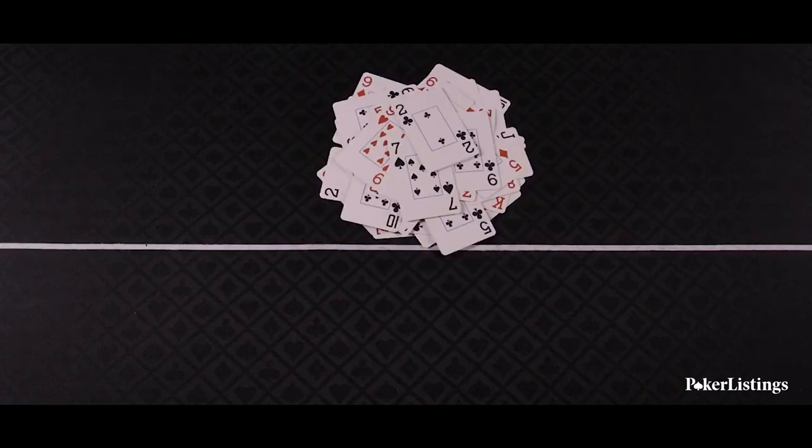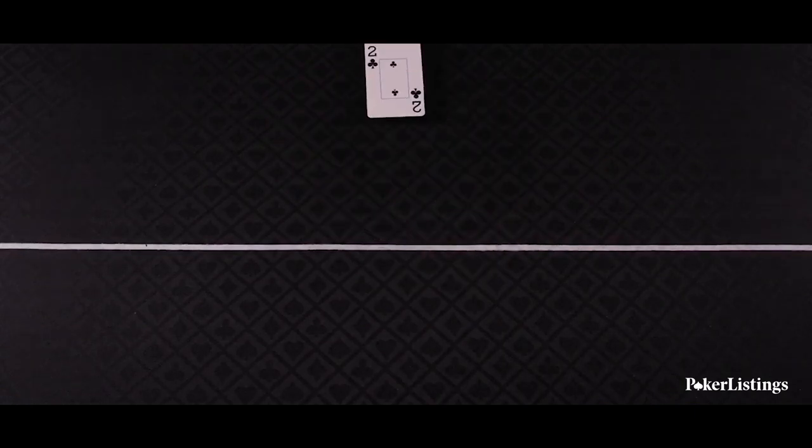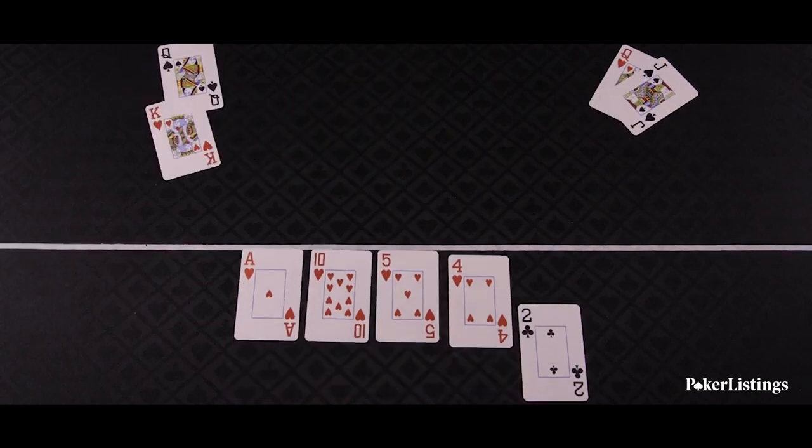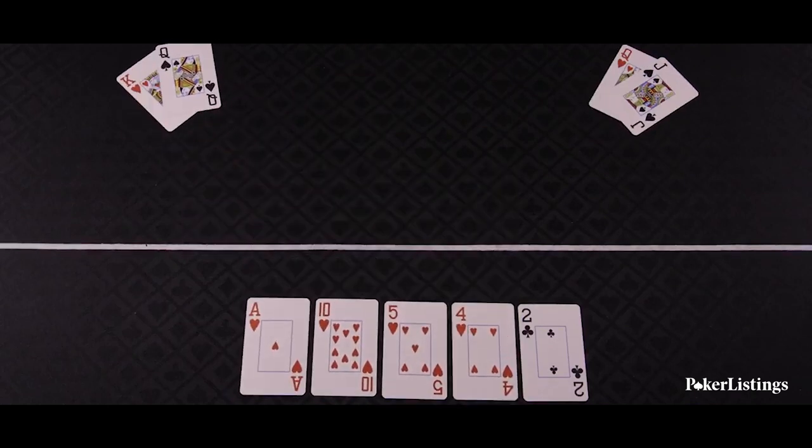The same is true when two players have a flush with the same high card. Both players have an Ace-High flush, but the player with the King of Hearts wins since he has higher suited cards.